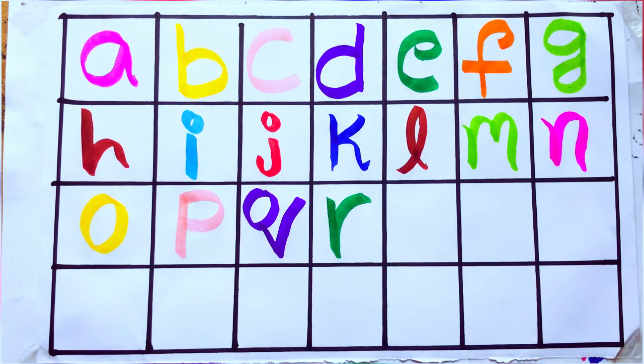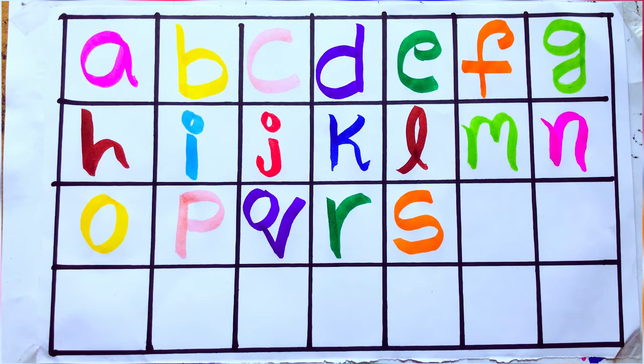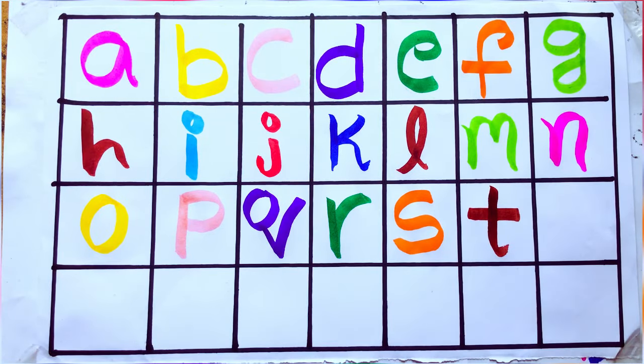Orange color, S. S for sunflower. Brown color, T. T for table.